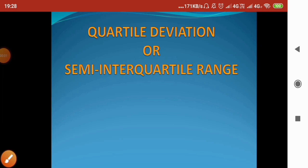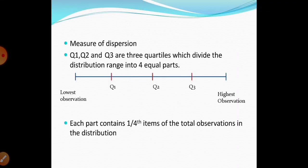Today we are going to deal with quartile deviation, or semi-interquartile range. Quartile deviation is a measure of dispersion. When you calculate the mean, extreme values in the data will affect it, so we calculate measures of dispersion.